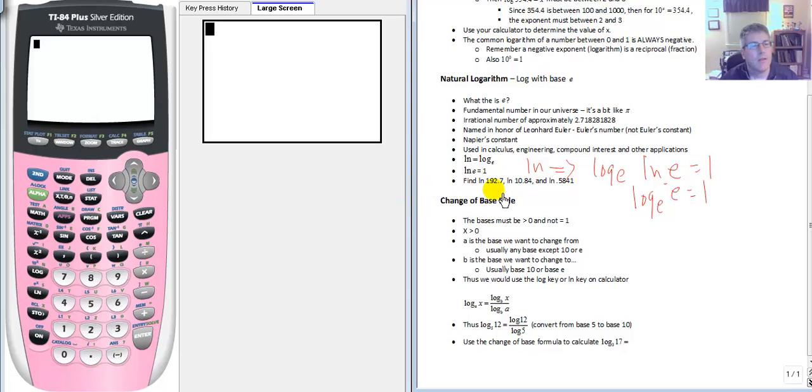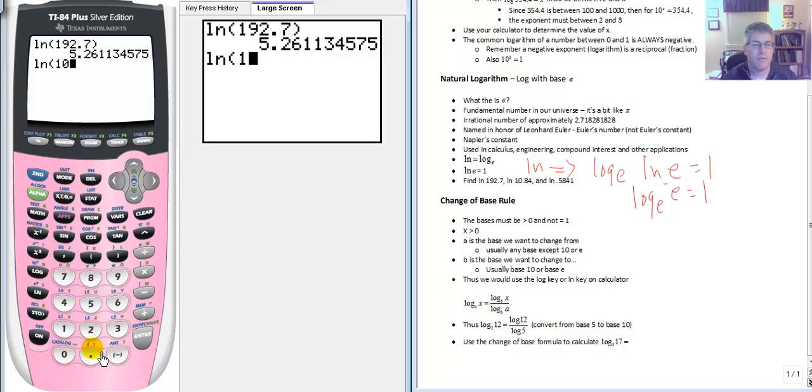So let's say we want to find the natural log of 192.7. Well, we just go to our calculator. Natural log 192.7. And we get that value. The natural log of 10.84. Put that in your calculator. Then we get the value. I'll let you find the natural log of 0.5841 and you can bring that into class.